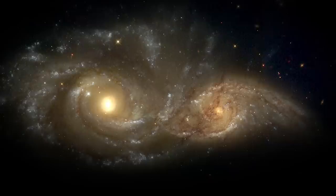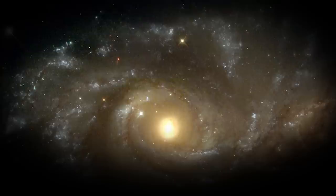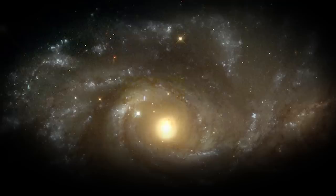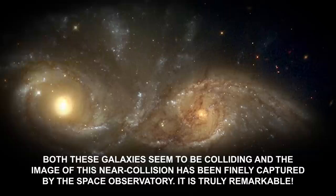Number 4: Encounter between a couple of spiral galaxies. This extremely vivid image captured by the Space Observatory shows two spiral galaxies located near the constellation of Canis Minor. The event of a confrontation between the spiral galaxies is clearly highlighted in the picture. Both of these galaxies seem to be colliding, and the image of this near collision has been finally captured by the Space Observatory. Truly remarkable.